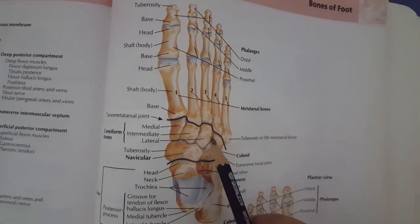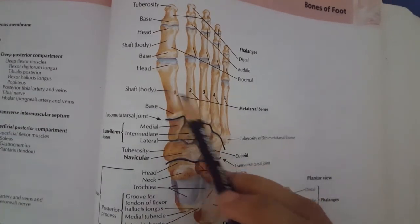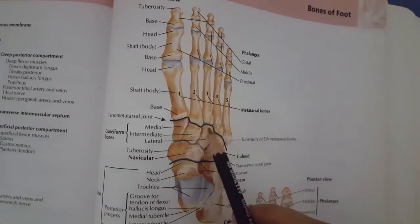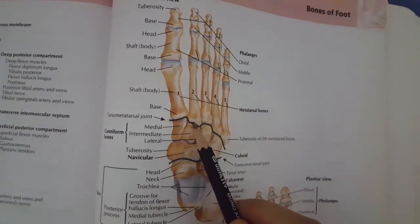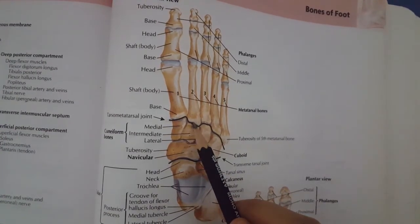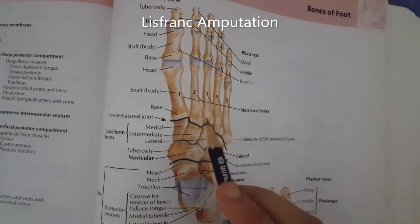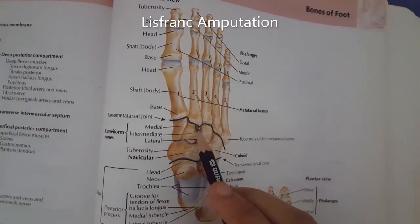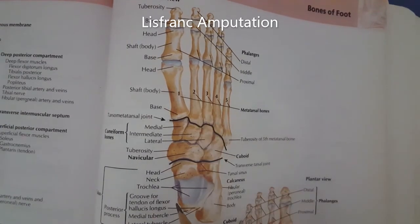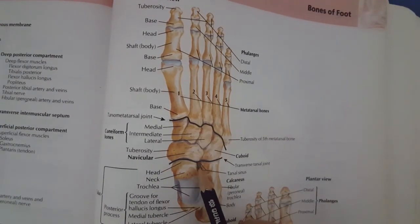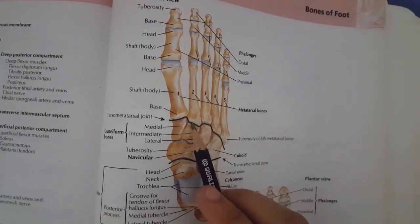Next, we can do amputation between the tarsal bones and the metatarsal bones. The joint here is called the tarsometatarsal joint, and this amputation is called Lisfranc amputation. You can remember it by thinking that 'Miss France' is stuck between the tarsal and metatarsal bones. So this is called Chopart and this is called Lisfranc amputation.